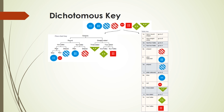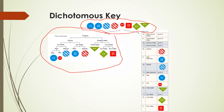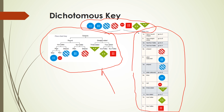Here we have two examples of how we can represent a dichotomous key. In this case, we're trying to group a big collection of buttons into smaller groups — and we could name those smaller groups, which is what happens in real life with animals. There are two formats shown: a branching diagram and a table. In my opinion, the branching diagram is much easier to understand, and we'll be focusing mainly on that form.